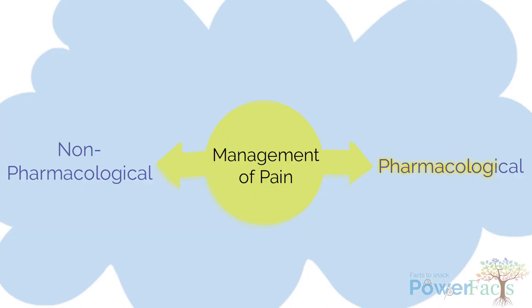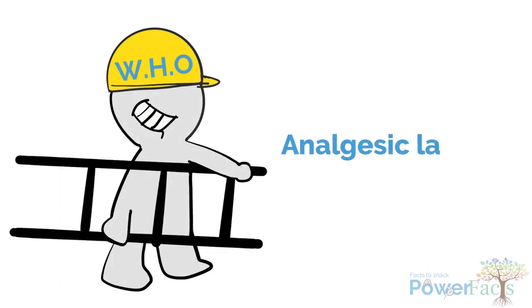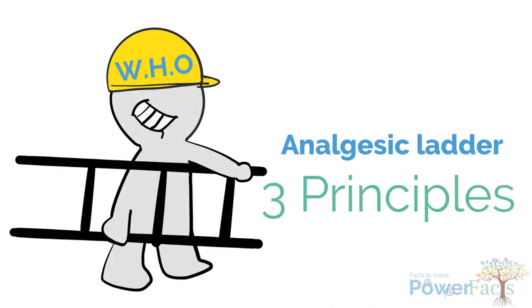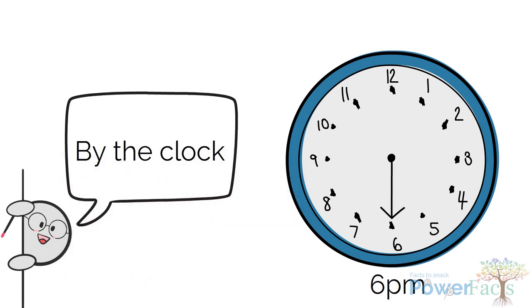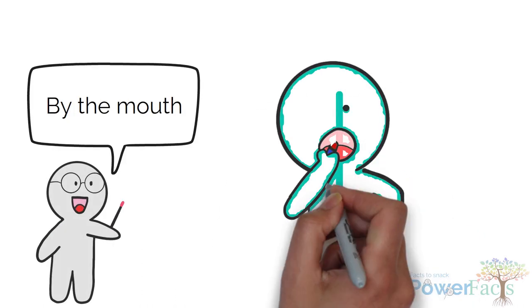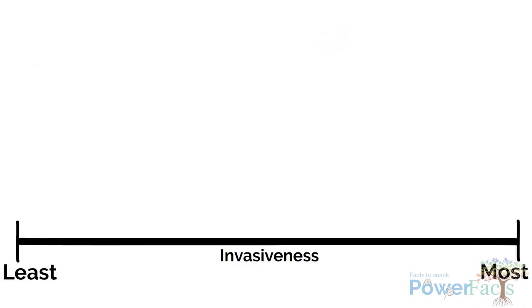We'll now look at some of the pharmacological ways to manage pain. The World Health Organization analgesic ladder recommends three principles. Number one, by the clock — when medications are given regularly rather than on demand. Number two, by the mouth — when medicine taken orally is preferred for ease of use. If oral administration is not possible, the least invasive route should be chosen.